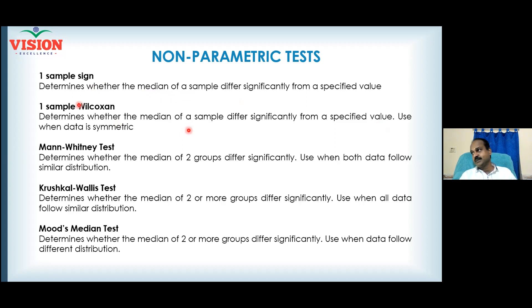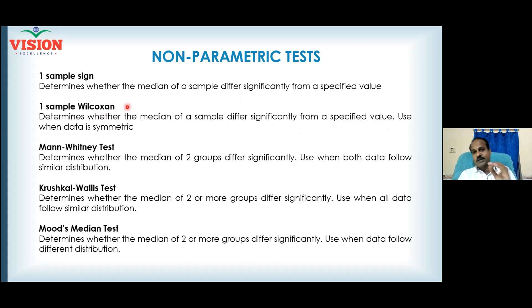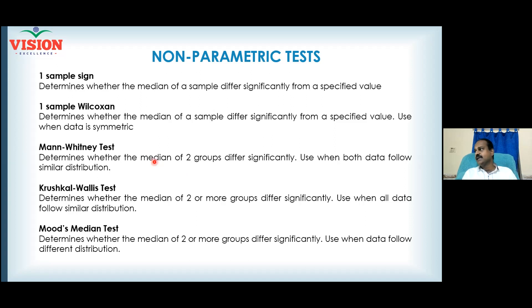If you want to determine whether the median of a sample differs significantly from a specified value and your data is symmetric — not normal but symmetric — the one-sample Wilcoxon test will help you. The Mann-Whitney test determines whether the medians of two groups differ significantly — instead of two means, now it is two medians — and is used when both datasets follow a similar distribution.